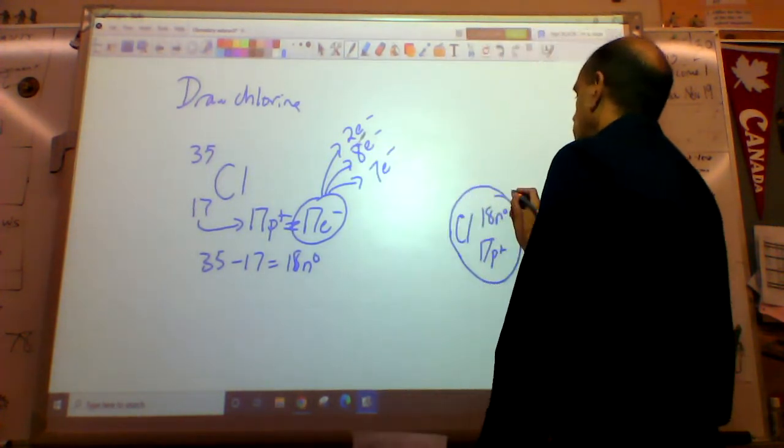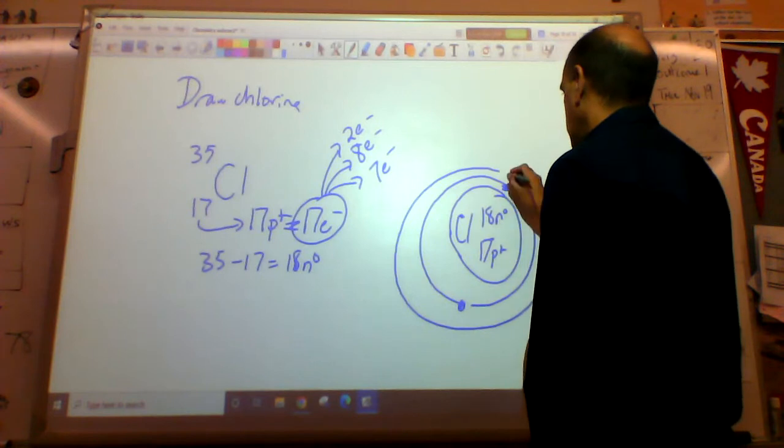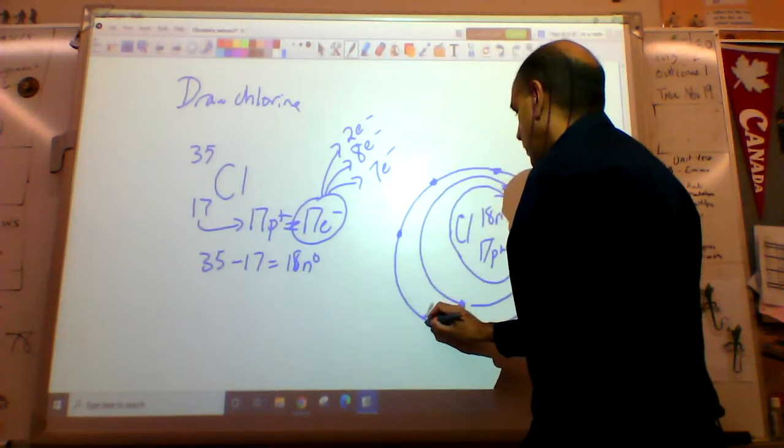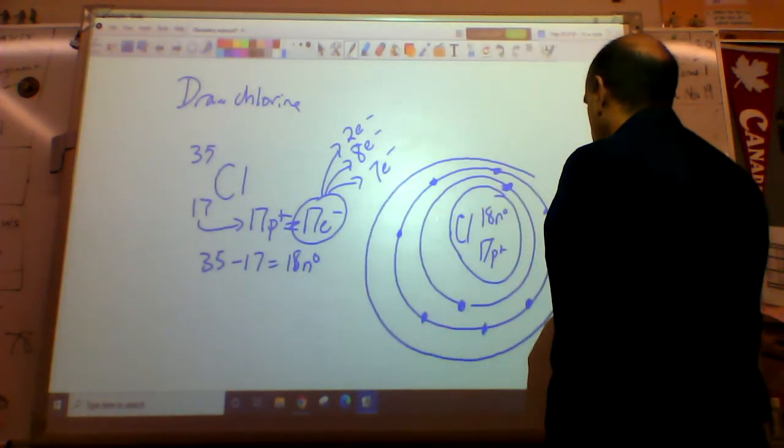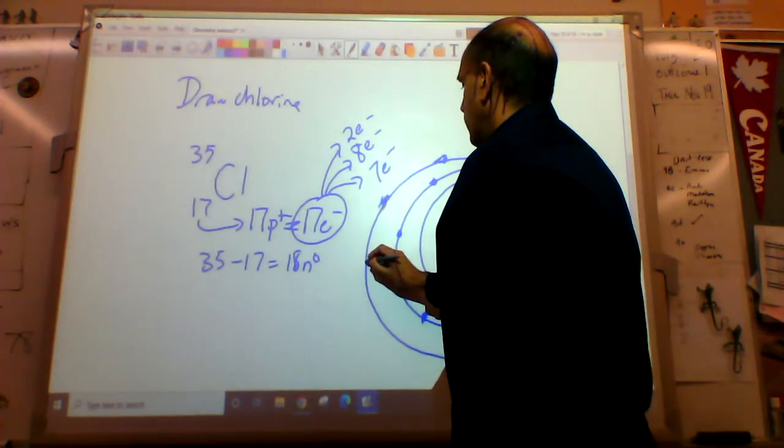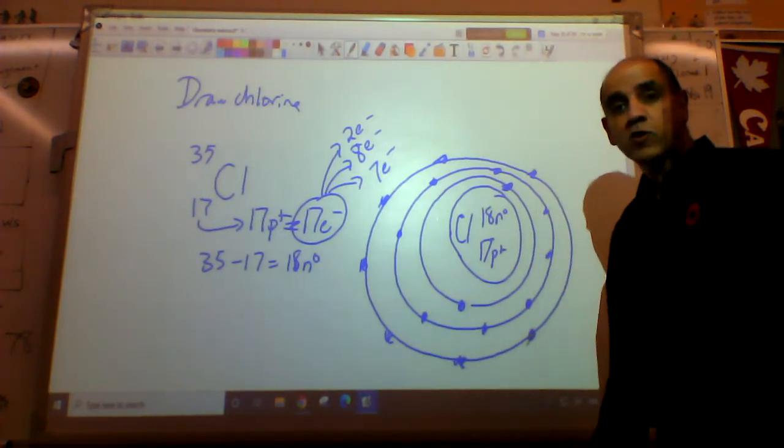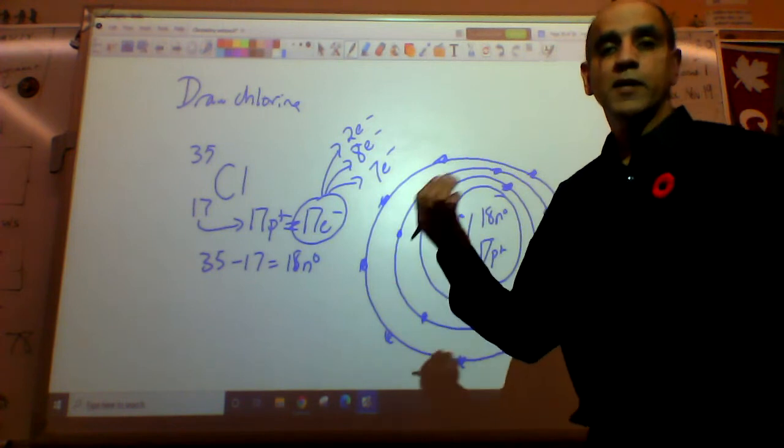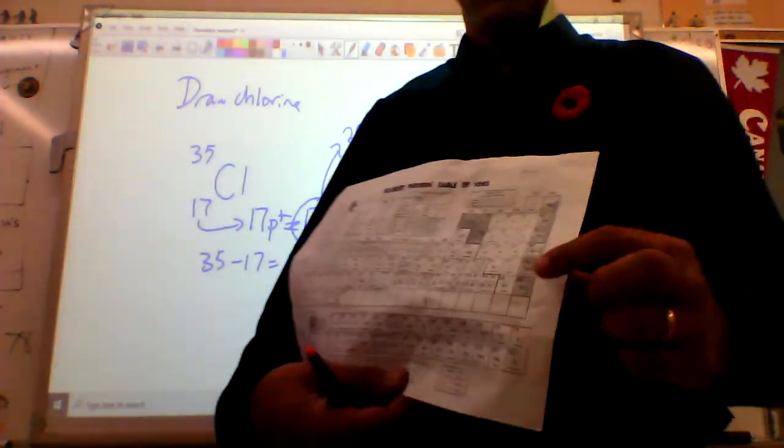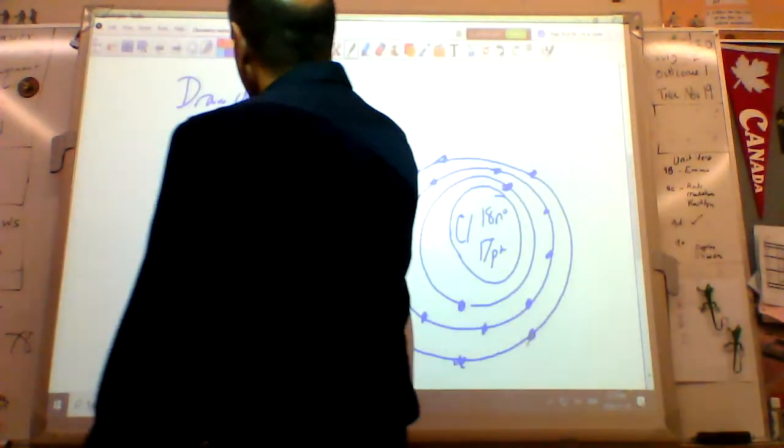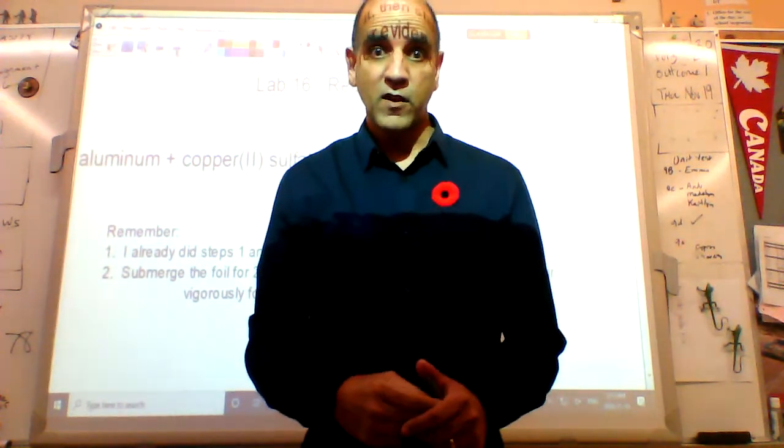That is how you have to place them. First shell, two electrons - one, two. Second shell, one, two, three, four, five, six, seven, eight electrons. Last shell, seven electrons - one, two, three, four, five, six, seven. Is it stable? No. In order to be stable, you have to give up seven electrons or pick up one. Easier to pick up one. If chlorine picks up an extra electron, it had no charge before. Now it has an extra minus in it. The charge on it is minus one.